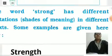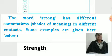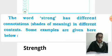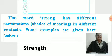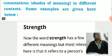The word 'strong' has different connotations in different contexts. Connotations means underlying meanings or undercurrents in different contexts. Some examples are given here below. Strong means power, strength.